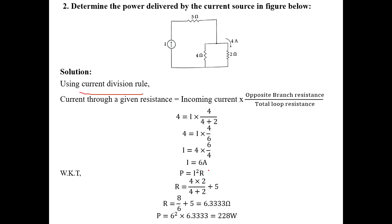To find power, P equals I squared times R. We must calculate the total R: the 2-ohm and 4-ohm resistors are in parallel, giving R_parallel equals (2 times 4) divided by (2 plus 4). Then add the series resistance. With I equals 6 amperes and R equals 6.333 ohms, P equals 6 squared times 6.333, which equals 228 watts.